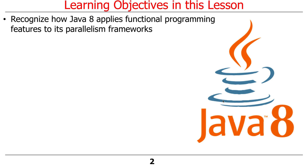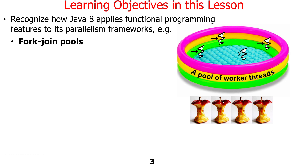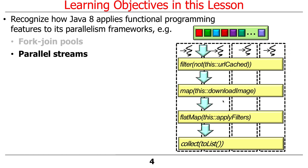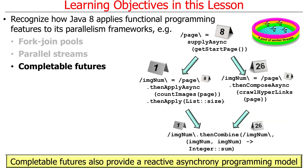I'm going to give you an overview of parallelism frameworks in Java 8. We're going to talk about fork-join pools, parallel streams, and completable futures. Completable futures are all parallelism frameworks, but they are really more from the point of view of a reactive asynchronous programming model — a very different programming model in many ways from the other forms of parallelism we'll talk about.